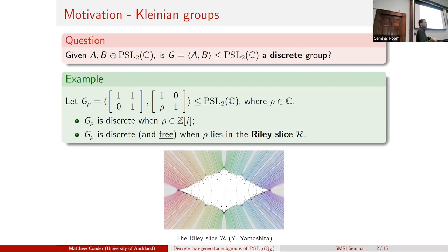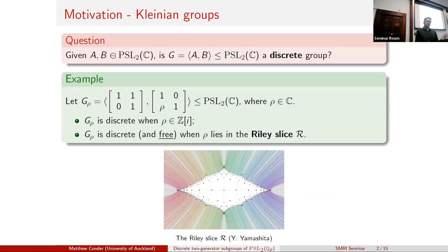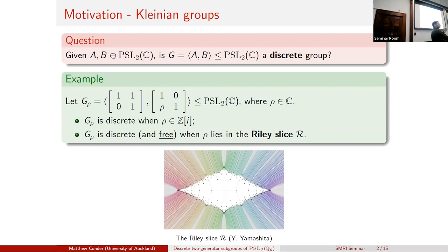A lot of work has gone into this, and this is motivating where we're coming from. We're interested in two-generated linear groups over some field and the question of how we can tell whether such a group is discrete or not. In general, this question is still open. There's no universal method to determine whether a given two-generated subgroup of PSL₂(ℂ) is discrete or not.